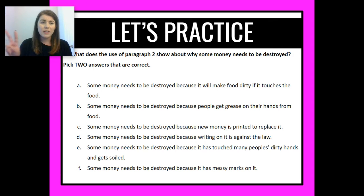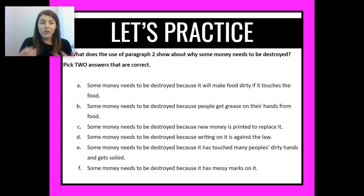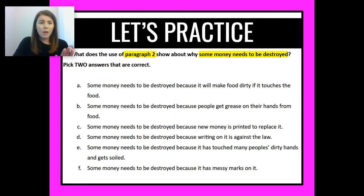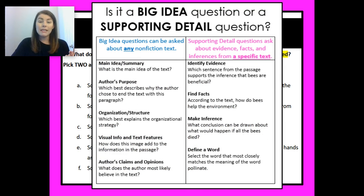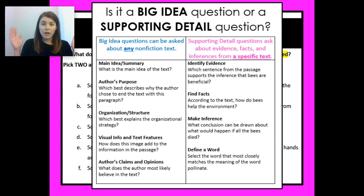We're picking two answers that are correct. So the first thing I need to do is think about what this is asking me. I need to decide: is this a big idea question or a supporting detail question? A big idea question is one that can be asked about any text, and a supporting detail question is one that can be asked about a specific text.